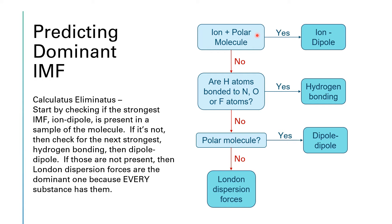If ion-dipole is not present, the next thing you look for is hydrogen bonding. Do you have a hydrogen atom in the compound that's bonded to a nitrogen, an oxygen, or a fluorine? If yes, it's hydrogen bonding. If no, then we check for dipole-dipole — if the molecule is polar, the dominant intermolecular force is dipole-dipole. Otherwise, by calculatus eliminatus, London dispersion forces will be the dominant intermolecular force.